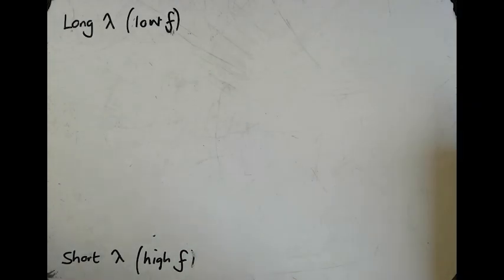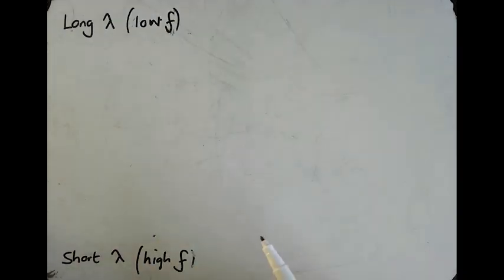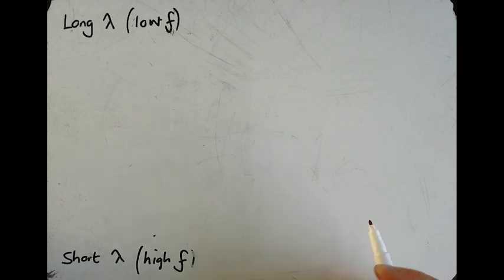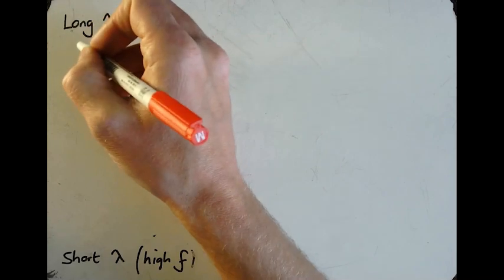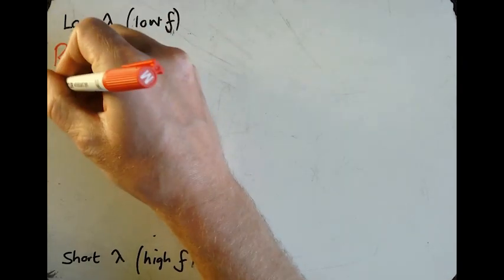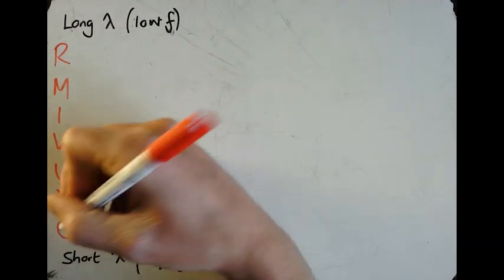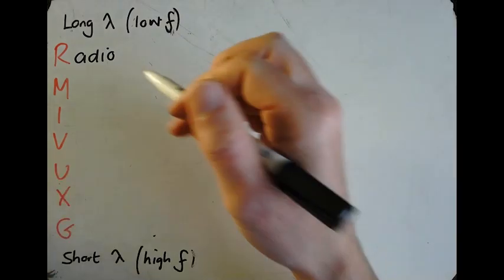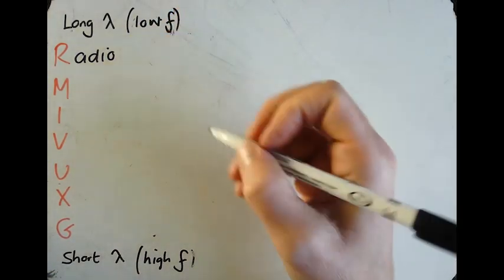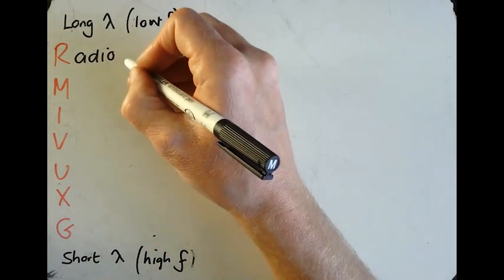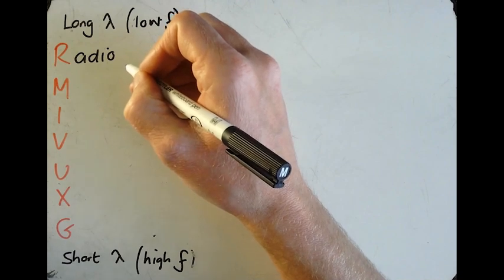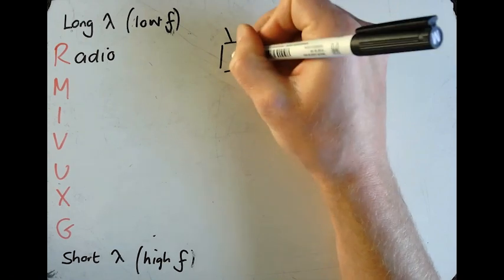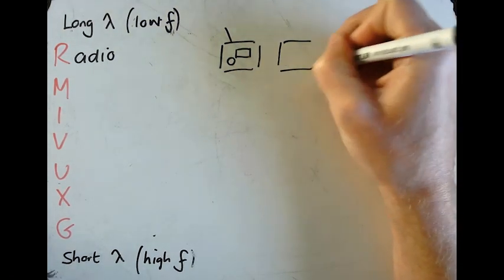You need to be able to know the uses and dangers of the different waves in the electromagnetic spectrum. Starting with the longest wavelength: R is radio waves. Radio waves are used for communication — for radio communication and for TV signals via aerials.